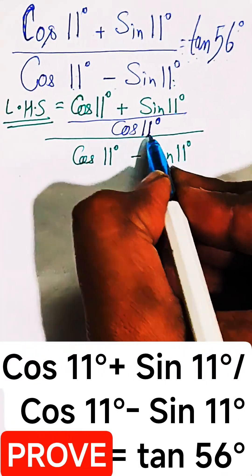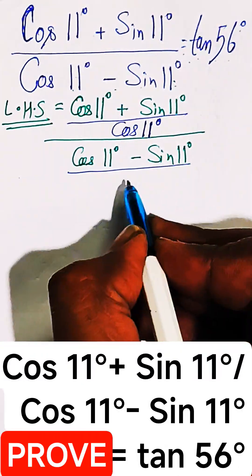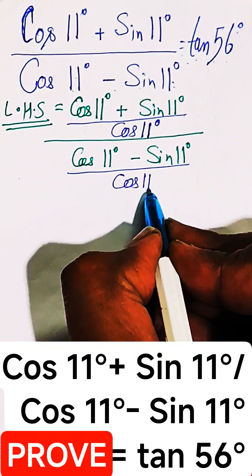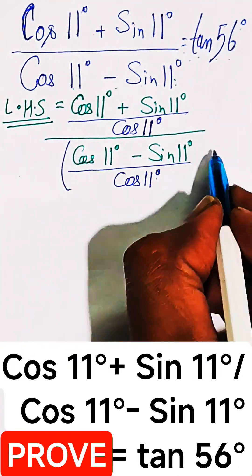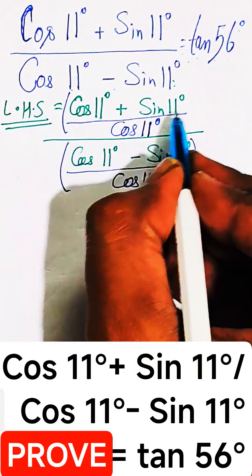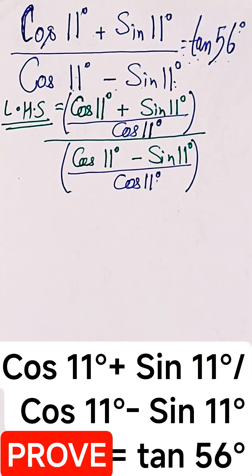Why are we doing it? I will explain. By cos of 11 even into the denominator. So the entire LHS will be looking like this.